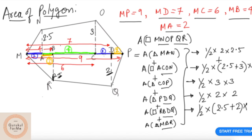What is triangle MBR? Half into base. Base is MB, which is 4, into height, which is 2.5.